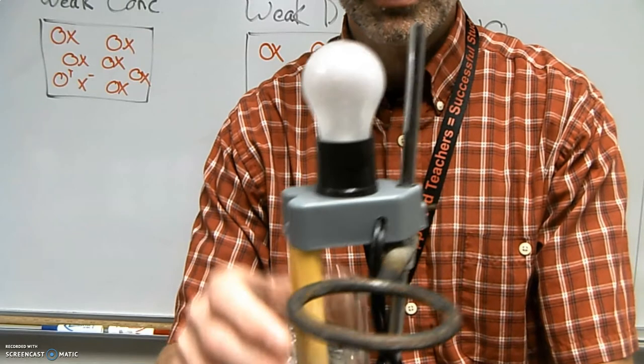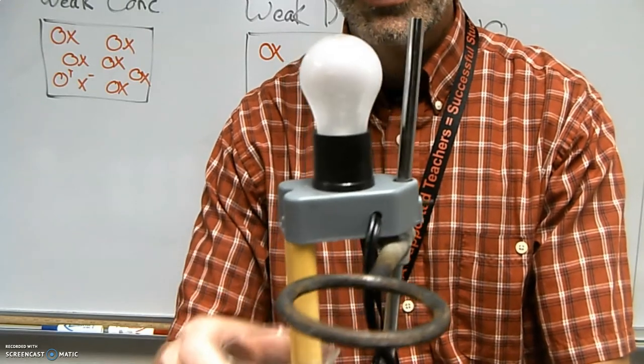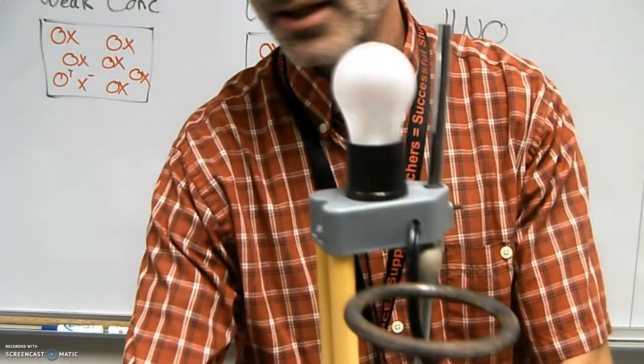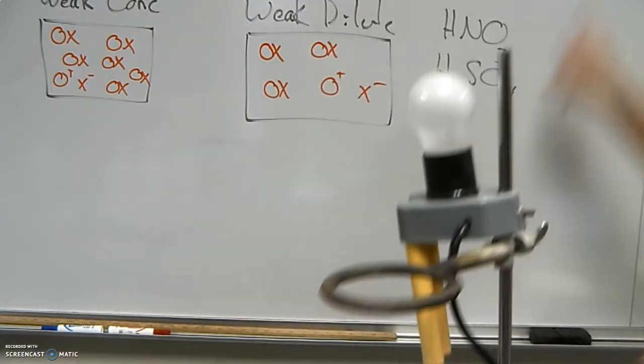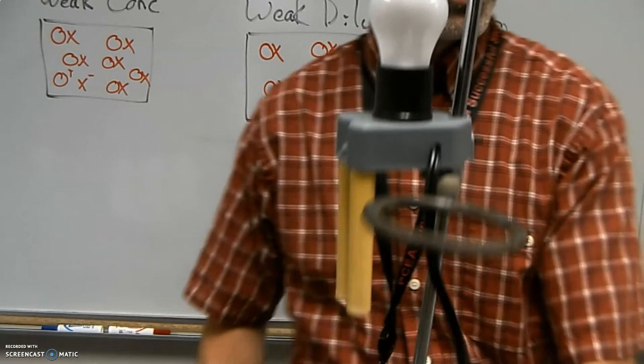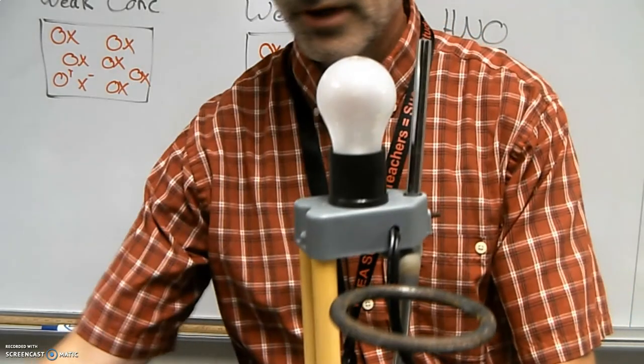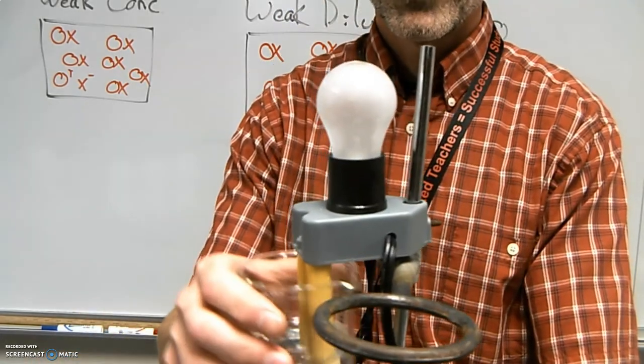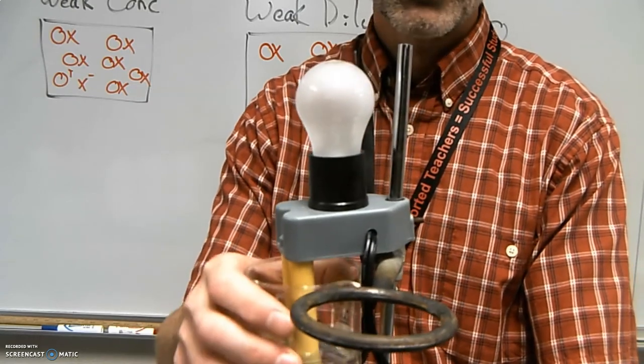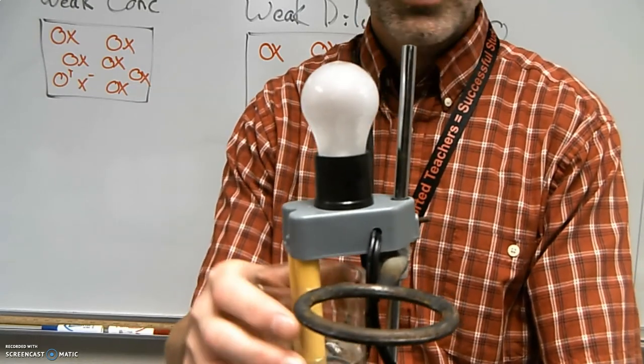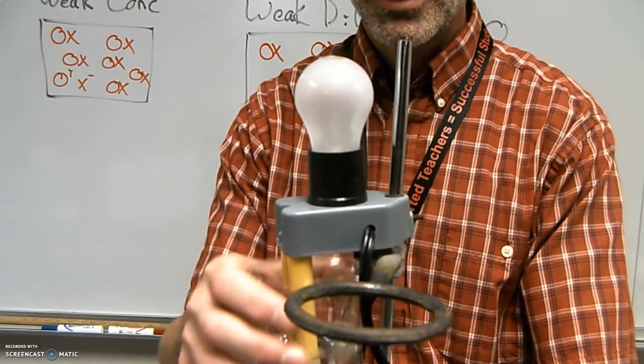And the last one I will do is a concentrated solution of acetic acid. Notice acetic acid was not one of those seven that we mentioned over here on the board. And we're going to see if this one will light the bulb as well. If I had maybe a little more concentrated and it was really dark in here, we could see this barely lighting up.